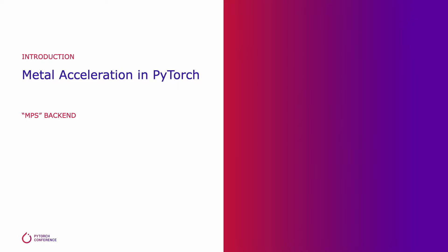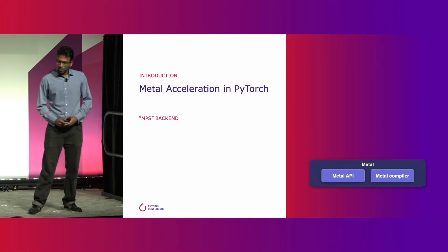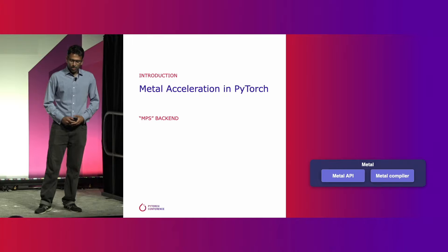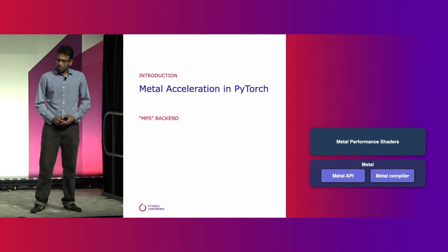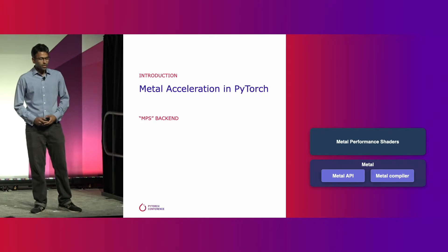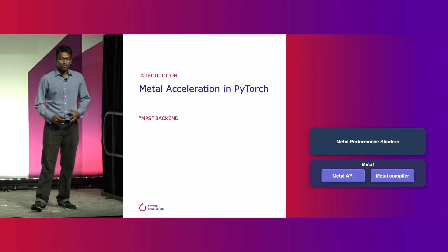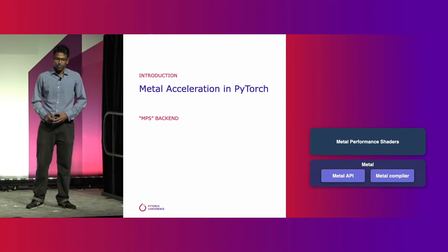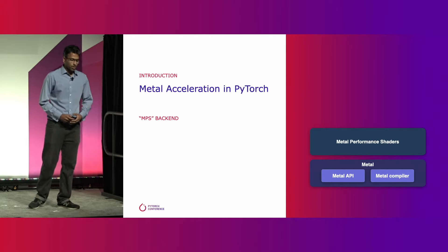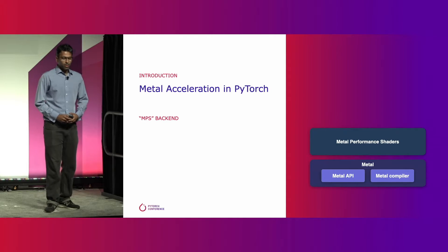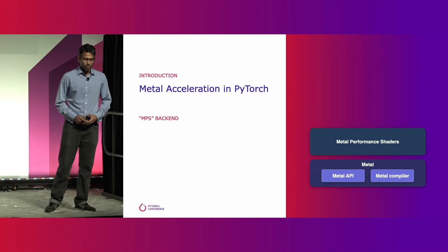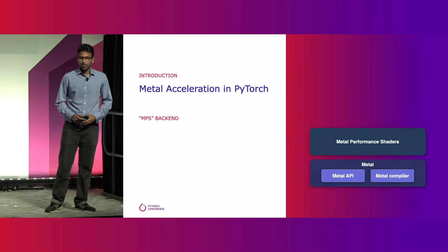Let's talk a little bit about our MPS backend and the software components it relies on. Metal is the GPU programming API on Apple platforms. Metal Performance Shaders is a collection of high-performance GPU primitives for various fields like image processing, linear algebra, ray tracing, and of course, machine learning.